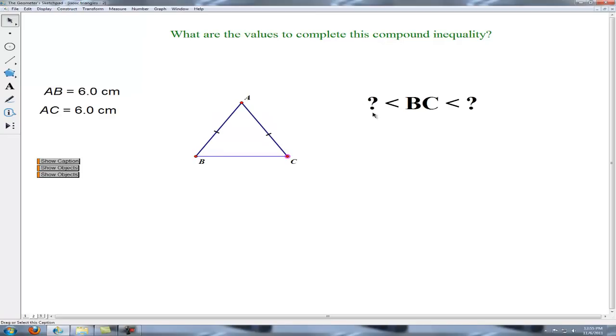This other value, which BC must be greater than, we can see on the diagram here when C and B coincide, and that makes a length of 0. So BC has to be greater than 0, less than 12.